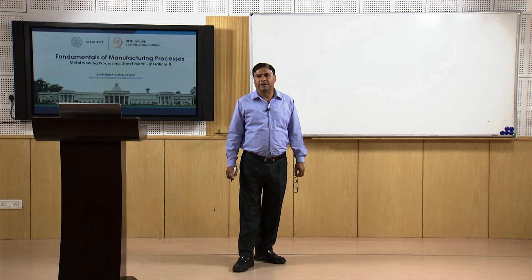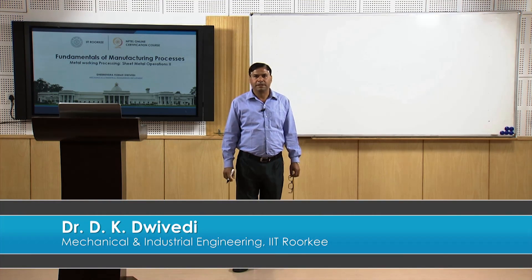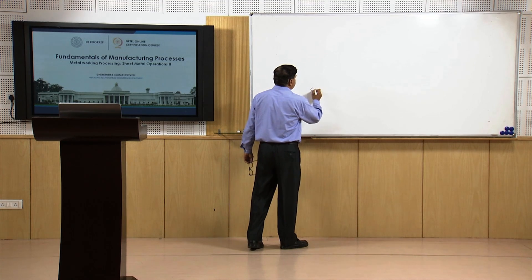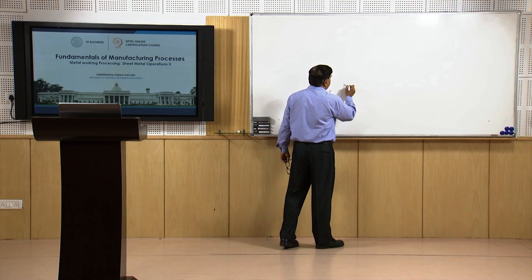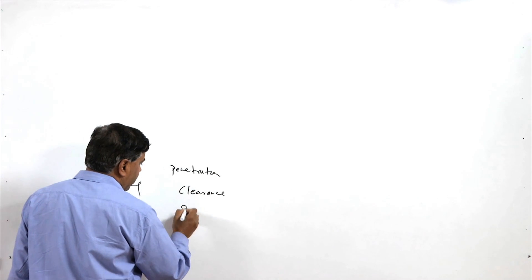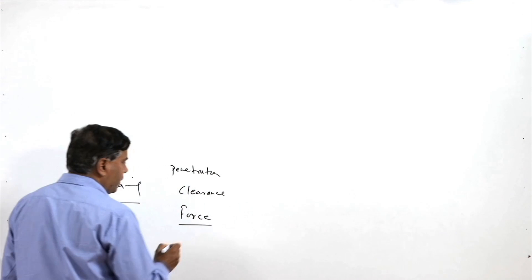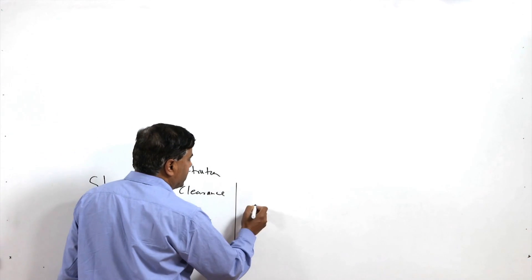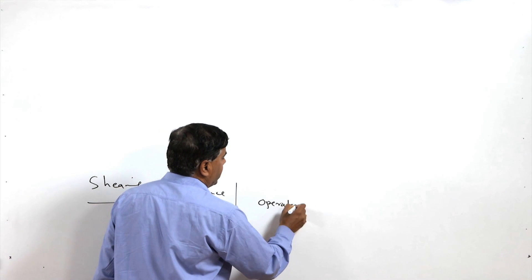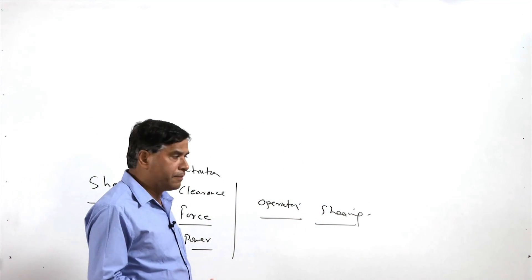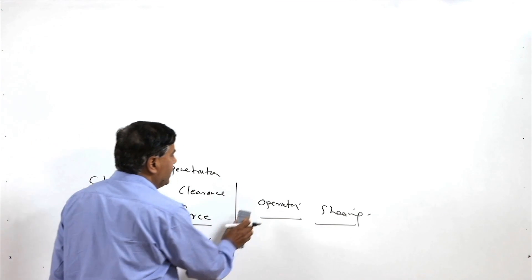Hello, I welcome you all in this presentation related to the fundamentals of the manufacturing process. We are talking about sheet metal operations. In the previous presentation, I talked about the mechanism of shearing used for metal cutting in sheet metals. Here I talked about the role of penetration and clearance. Apart from this, we also need to look into the shear force required and the power consumption in shearing. Thereafter, we will see operations related to shearing: punching, blanking, nibbling, notching, shaving, and so on.